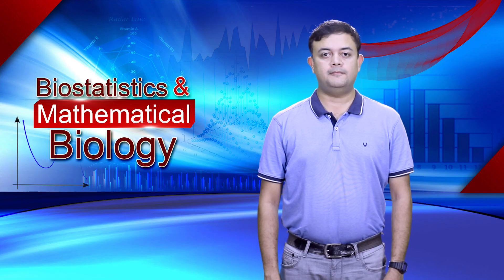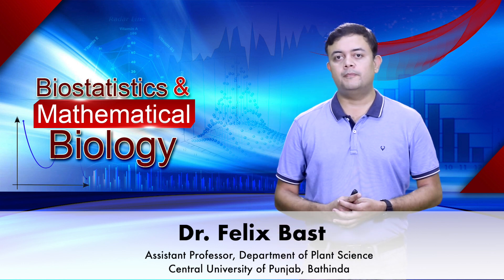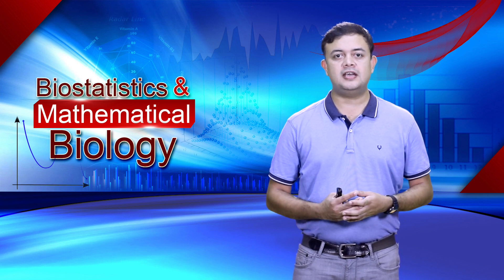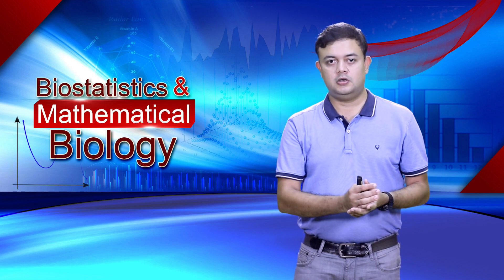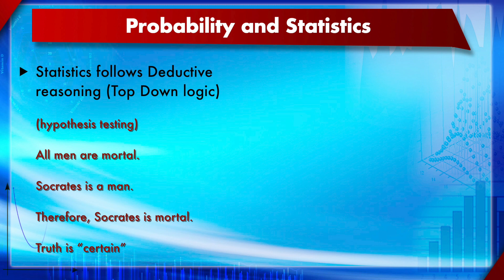Module 27, Probability, Section 1: Probability Basics. In module 1 we saw the difference between deductive and inductive reasoning. Deductive reasoning goes from the general to the specific, and is used in statistics where we have a null hypothesis and test its validity. For example: all men are mortal, Socrates is a man, therefore Socrates is mortal. In such cases truth is certain — valid or invalid, significant or non-significant.